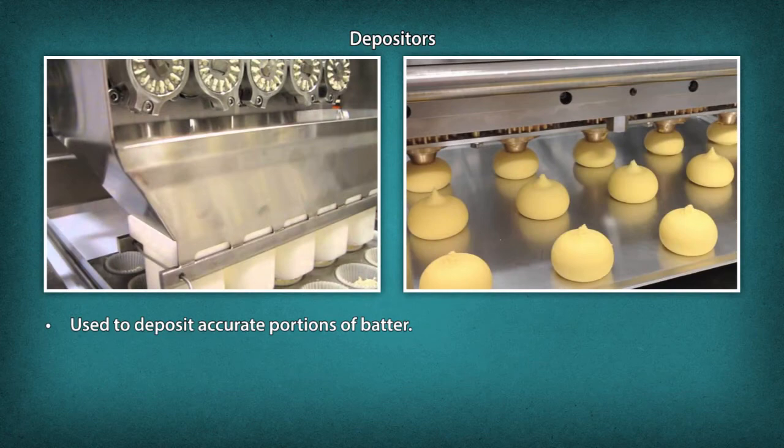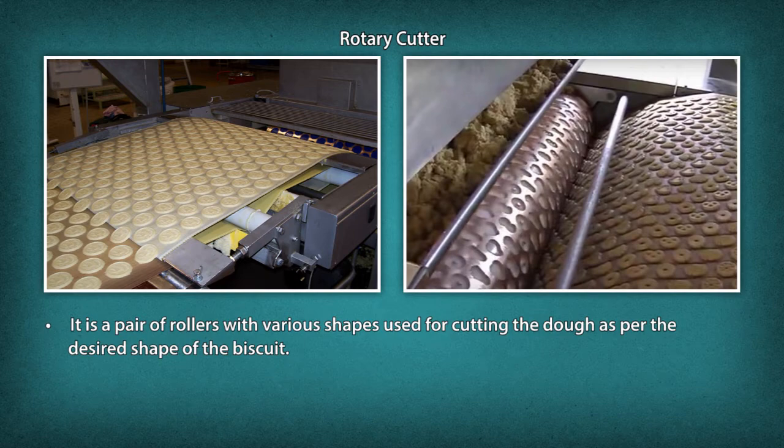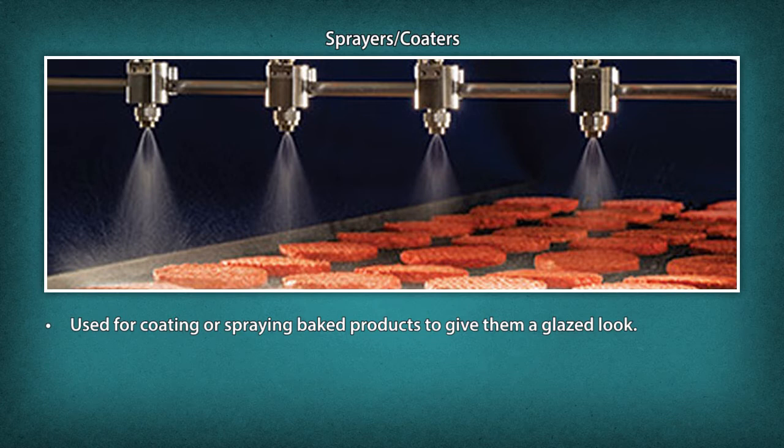Rotary Cutter: It is a pair of rollers with various shapes used for cutting the dough as per the desired shape of the biscuit. Dough Molders: It is used to get the desired shape of biscuit, cookie or cake. Sprayers/Coaters: It is used for coating or spraying baked products to give them a glazed look.